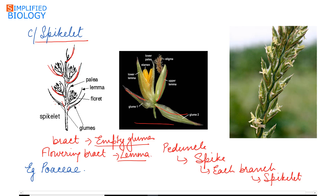Spikelet inflorescence is the characteristic of family Poaceae, whose older name was Gramineae — the grass family or cereal family.